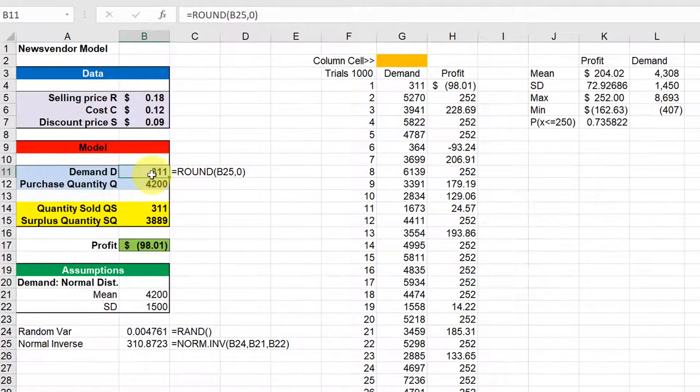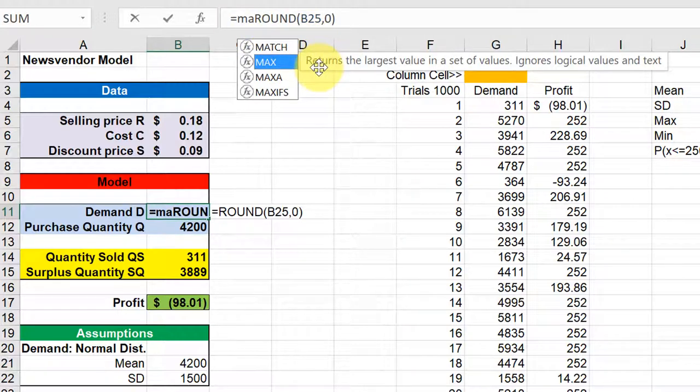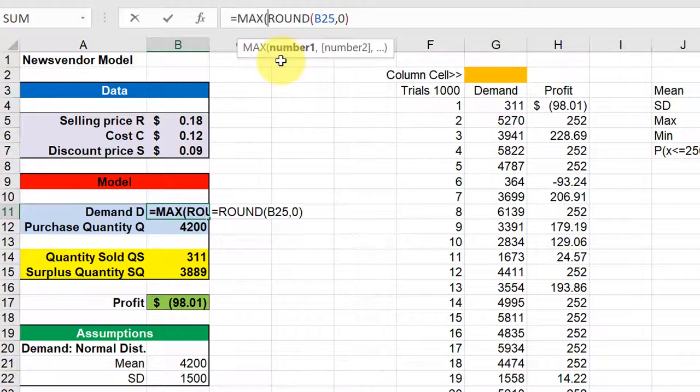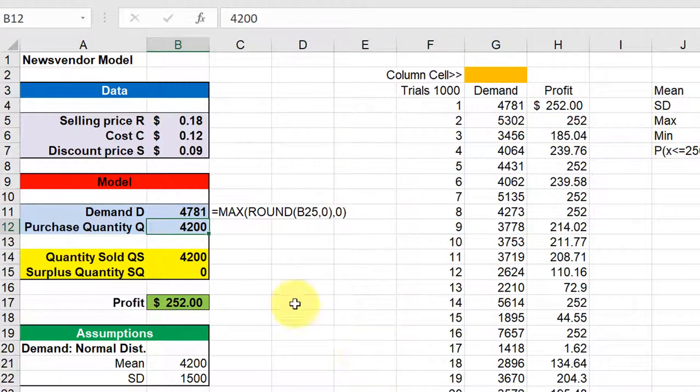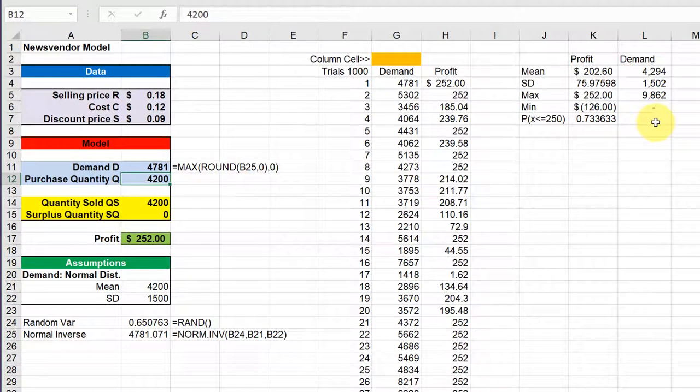We need to stop demand from going below zero. There's a good way in Excel using the max function. It returns the largest value in a set of values. I'm going to double click on max to select it. The first variable is our random variable for demand, but we want to put a second variable of zero and close that. Now we have the formula max of either the random variable for demand or zero, whichever is larger. You can see our minimum value of demand stops at zero. Look at your variables and make sure your random variable doesn't return an unrealistic value.